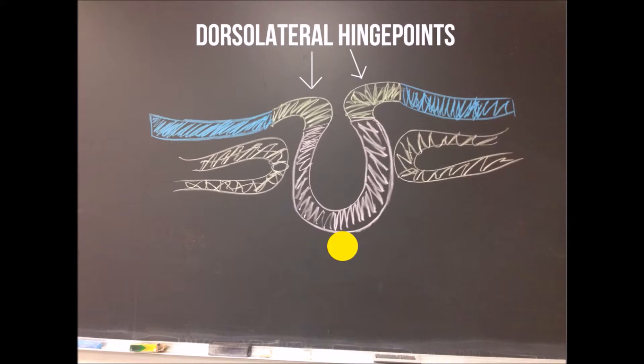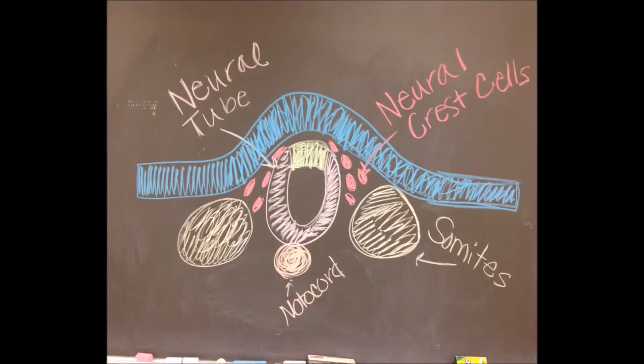Two dorsolateral hinge points form under the presumptive neural crest. The neural tube closes at the neural folds. The surface ectoderm then forms epidermis, and the neural crests migrate outwards.